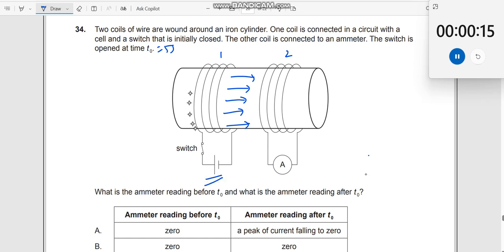You put a DC current, so there will be a constant magnetic field. So, no change in the magnetic field, no induced EMF, no induced current. Therefore, the reading here would be zero.